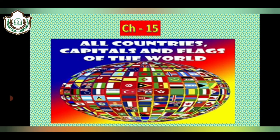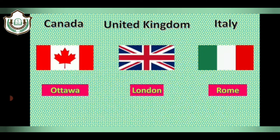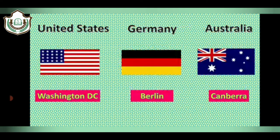As you know that New Delhi is the capital of India. Similarly, all the countries of the world have different capital cities. Let us learn the capital of various countries around the world. Ottawa is the capital of Canada. London is the capital of United Kingdom. Rome is the capital of Italy. Washington DC is the capital of United States. Berlin is the capital of Germany. Canberra is the capital of Australia.